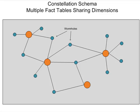And a constellation schema is when I have multiple fact tables which can share dimensions. Let me show you an example in my lemonade stand.